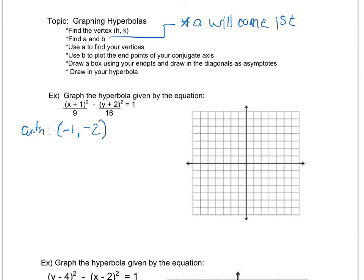Then I'm going to find my a and my b. a is going to come first, so I can see that since 9 comes first, a² is 9, therefore a is the square root of 9 or 3. b is the square root of 16 or 4. So notice a is not the bigger number.